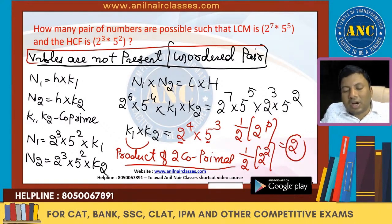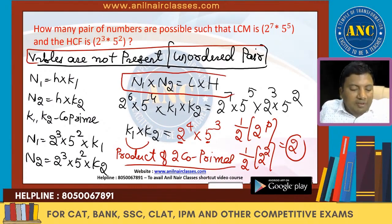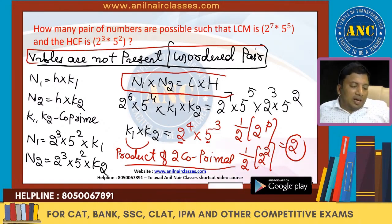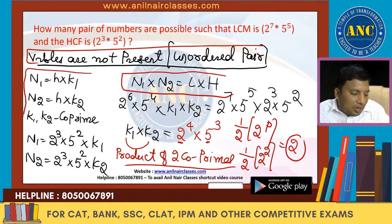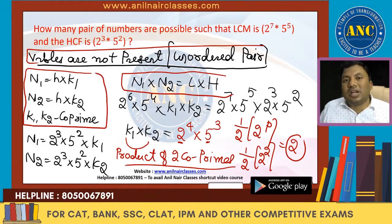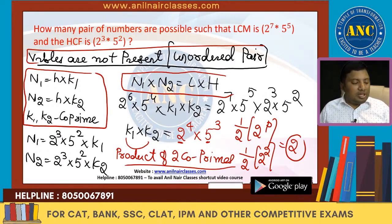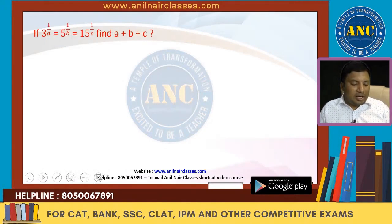If variables are not present, it is an unordered pair. Product of two natural numbers equals LCM × HCF only when HCF divides LCM. Any number can be written as H × K1 and H × K2 where K1 and K2 are co-prime. In an unordered pair it is half of 2^P; in an ordered pair it is 2^P.